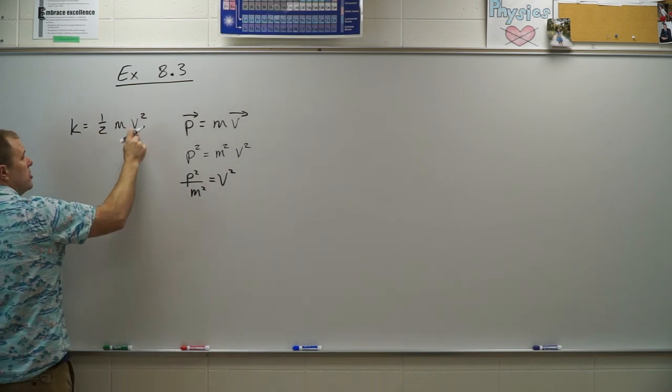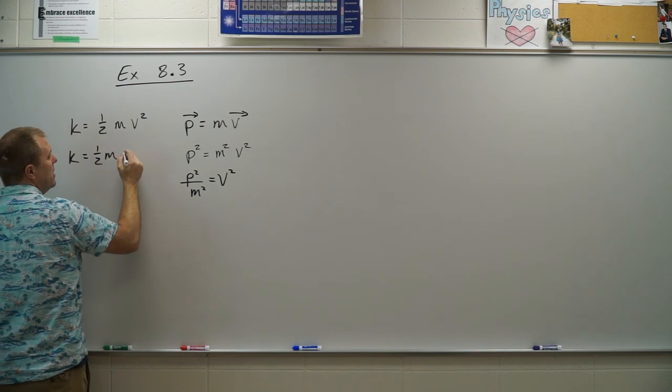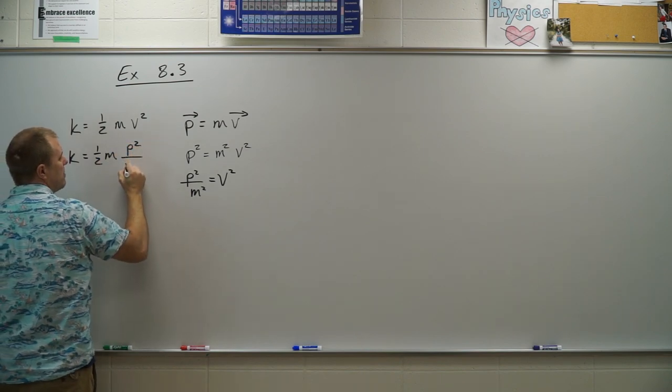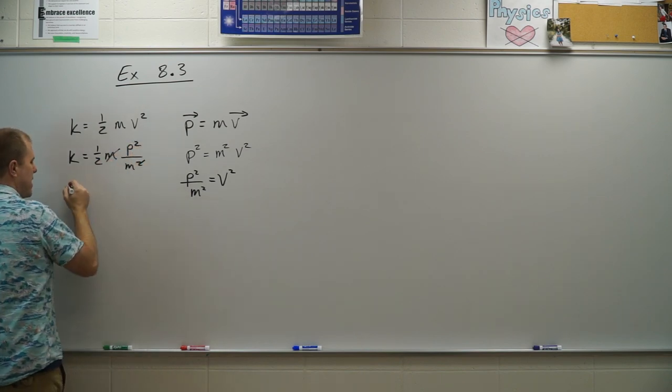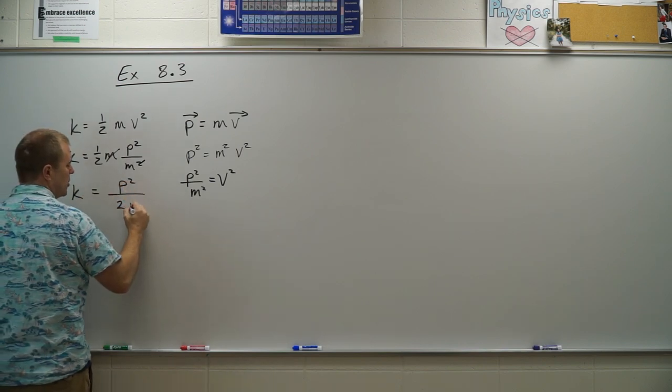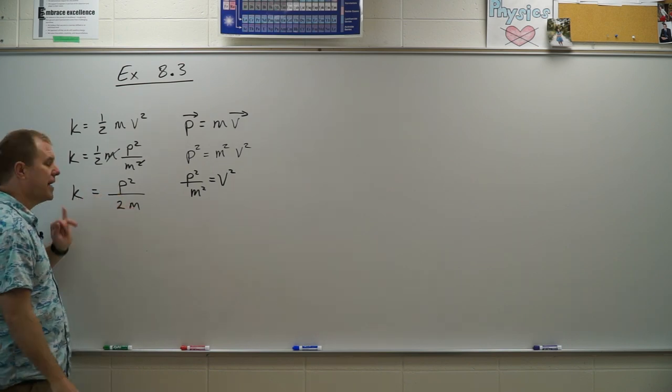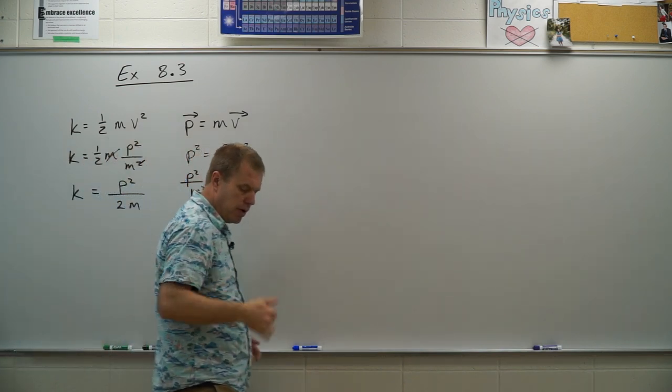Make my substitution for v squared here so I have kinetic energy is one half m times momentum squared divided by m squared. I lose one of my masses and I'm to the equation they wanted me to look at. If I have a scenario where I have the momentum and the mass, I can find the kinetic energy.